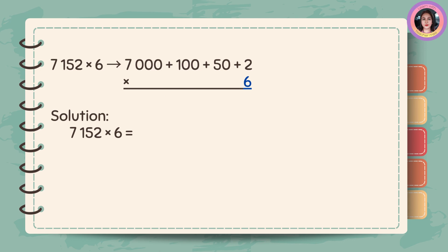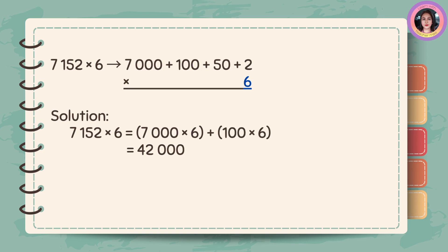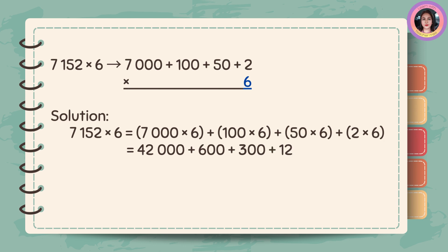Let's answer another example. 7,152 times 6 is equal to 7,000 plus 100 plus 50 plus 2 times 6. The solution: 7,000 times 6 is 42,000; 100 times 6 is 600; 50 times 6 is 300; 2 times 6 is 12. So 42,000 plus 600 plus 300 plus 12 is equal to 42,912.